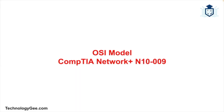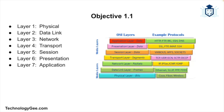What's up everybody, this is Tech G back with another video to help you successfully pass the CompTIA Network+ N10-009 certification. The Open Systems Interconnection, or OSI model, is a foundational framework for understanding and implementing network communication. It was developed by the International Organization for Standardization, and this seven-layer model breaks down the processes of network communication into manageable and distinct functions. Understanding the OSI model is not only essential but also a cornerstone for mastering networking concepts for the CompTIA Network+ certification.